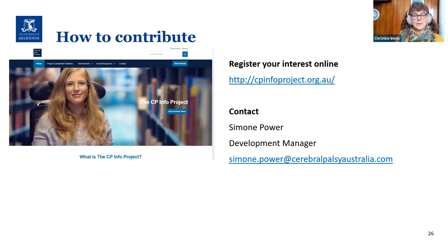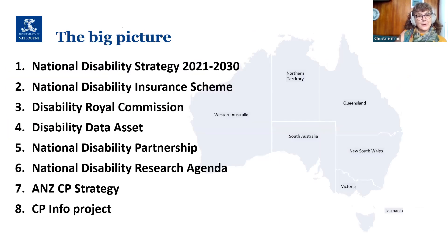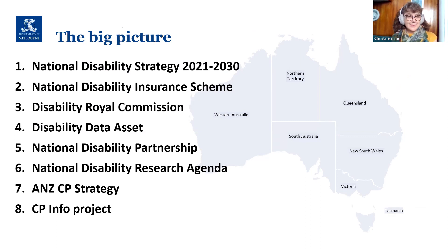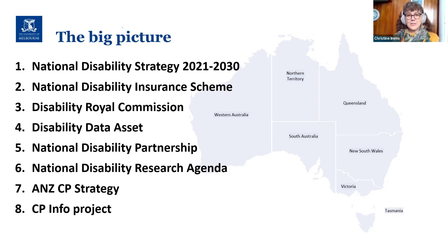To summarise the big picture: Bruce has talked about the disability strategy, the insurance scheme, the disability royal commission, the disability data asset, and the disability research partnership. Christine has given an overview of the national disability research agenda, the CP strategy, and the CP Info Project. We'd now like to open the floor to your questions, conversation, and thoughts. Thank you.